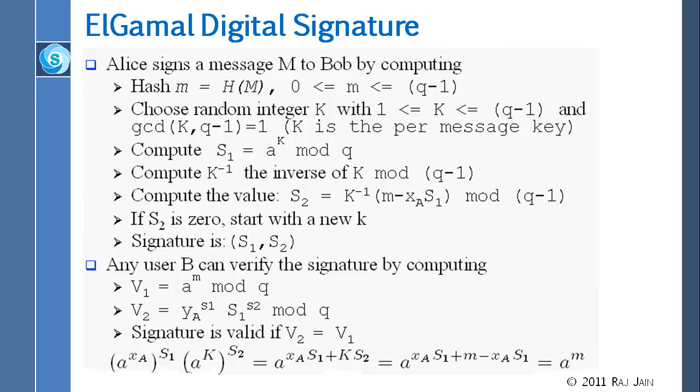Now you have to calculate k inverse, mod q minus 1. And then multiply that to m minus XA times S1. So you did use your private key, your private key XA here, to multiply and subtract it from m. And then multiply by this k inverse. And this is what is called S2. So this is your signature: S1, S2 is your signature. The main difficulty here is that you cannot invert S1. Because if you could invert S1, then you could figure out what k is. Once you could figure out k, you could figure out k inverse, and you could do a lot of other stuff. So the main thing is you cannot take the log, and therefore, you cannot find out k.